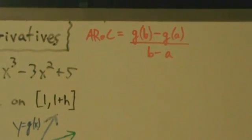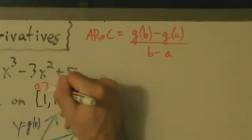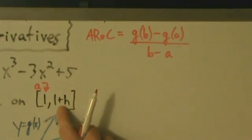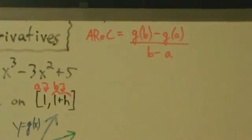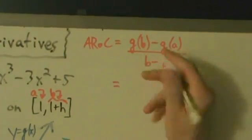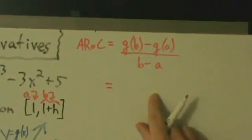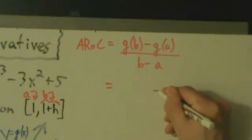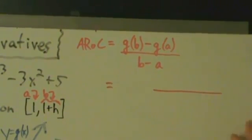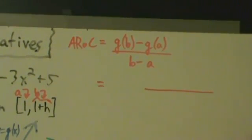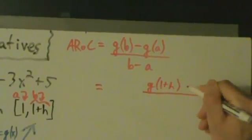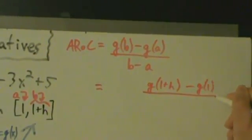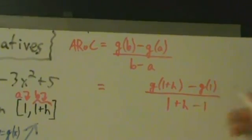So what's a and what's b? Well, a is where we start, which is 1, and b is where we end, which is 1 plus h. So this is going to equal — let's leave some space in here, because we're going to do something with that space later. This is going to be g of 1 plus h minus g of 1, all divided by 1 plus h minus 1.